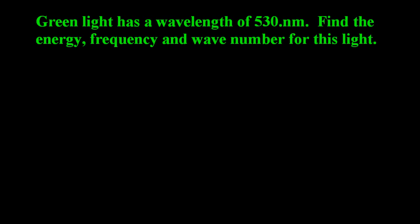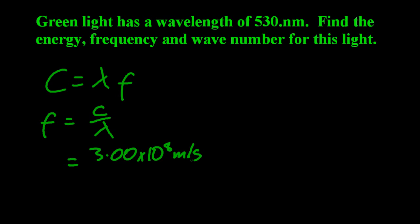So green light has a wavelength of 530 nanometres. Find the energy, frequency and wavenumber. Let's find the frequency first, rearranging that equation. Speed of light is 3.00 times 10 to the 8 metres per second. And okay, so that's my frequency.